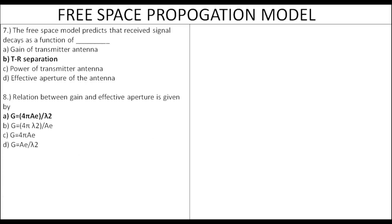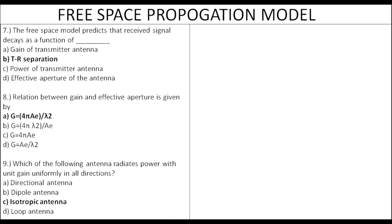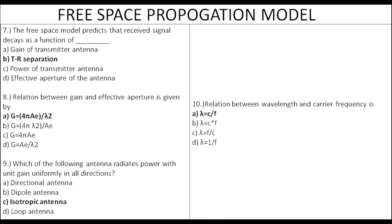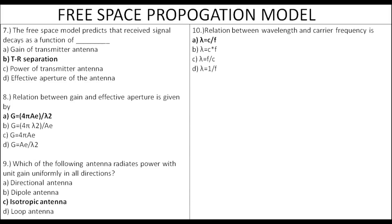Gain and effective aperture: the relation is g = 4π·Ae / λ². That means uniform directional unit gain. The isotropic antenna is a reference antenna. The wavelength and carrier frequency relation is λ = c/f, where c is the speed of light (3 × 10⁸ m/s) and f is the carrier frequency.